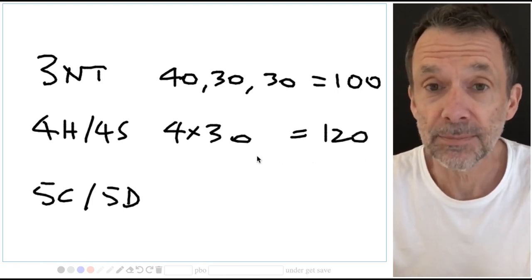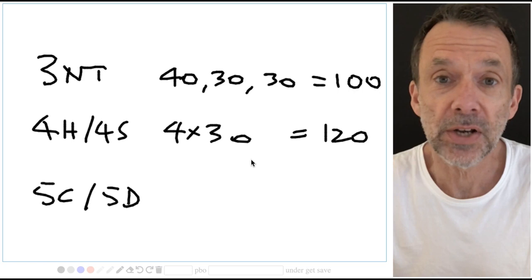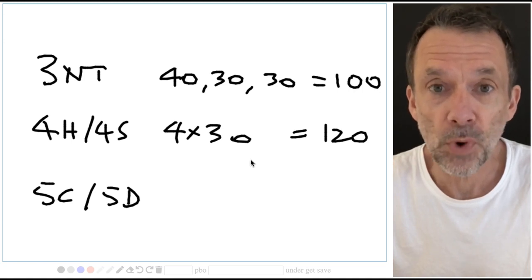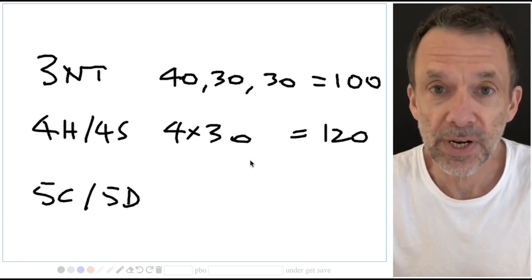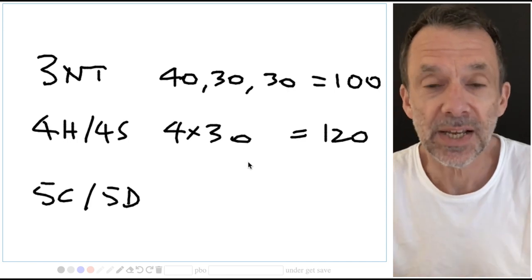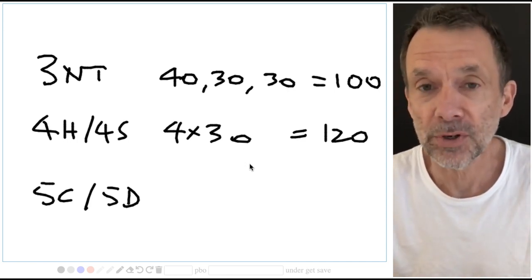Notice that three hearts making three is only 90 points. Four hearts making four, 120 points. So once you reach that 100 point threshold you get the game bonus.